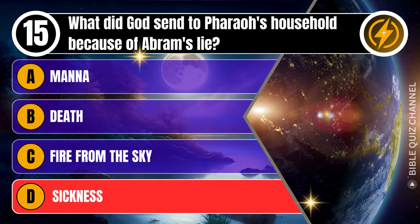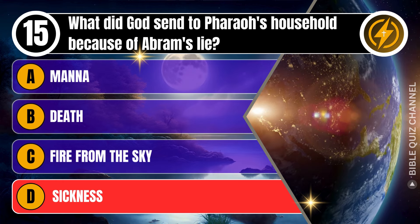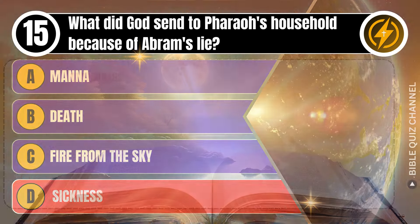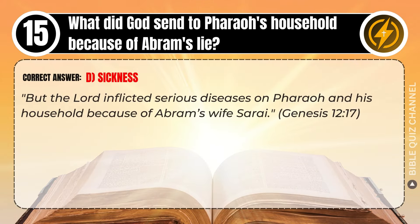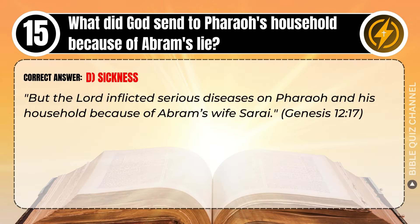Correct answer: D. Sickness. Explaining the Bible — But the Lord inflicted serious diseases on Pharaoh and his household because of Abram's wife, Sarai. Genesis, chapter 12, verse 17.